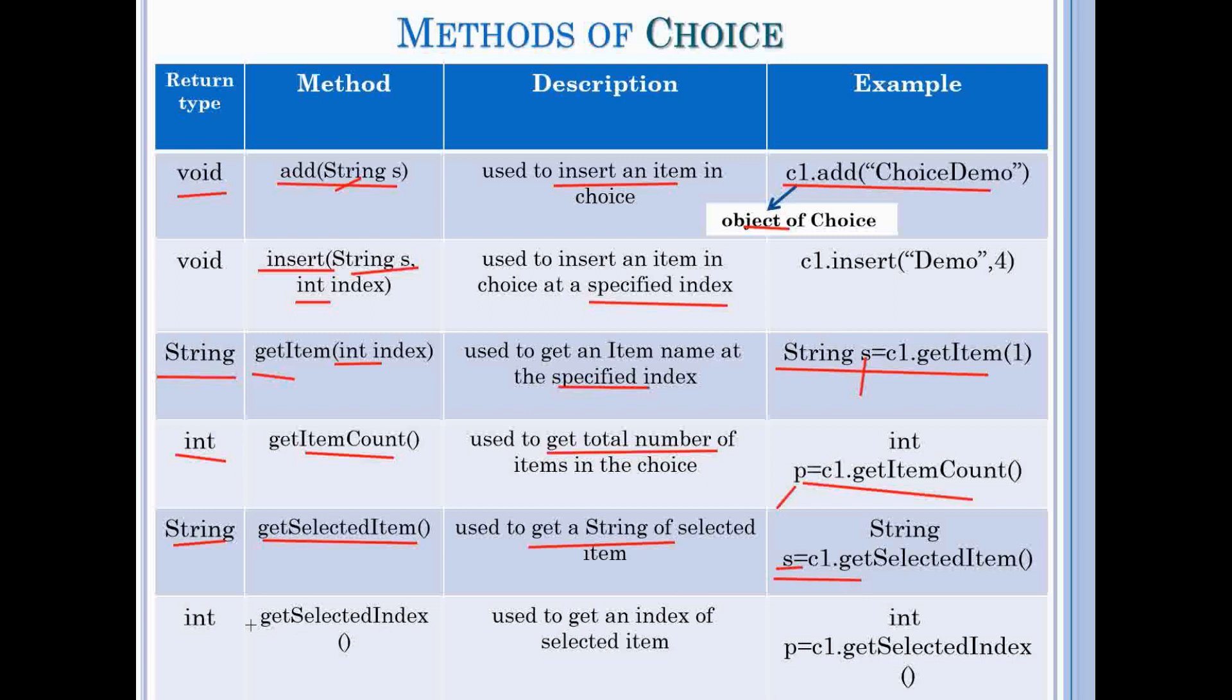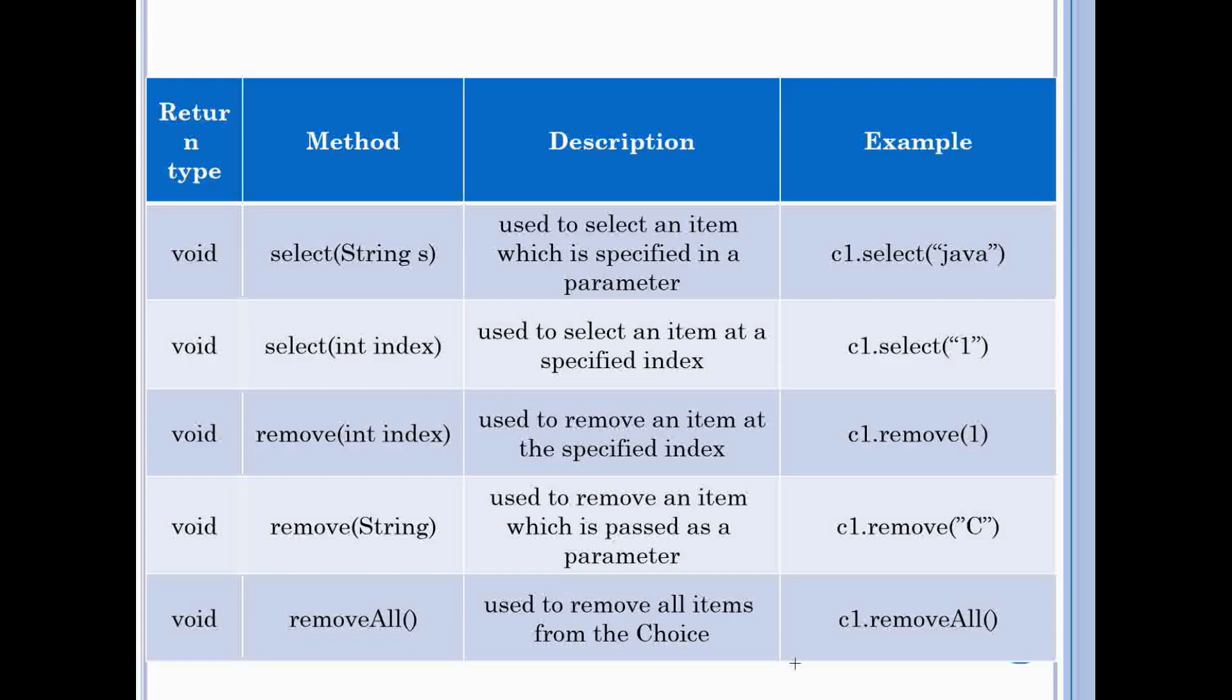Sixth method is getSelectedIndex which returns integer value and is used to get an index of selected item and store the result in integer value. Seventh method is select with string parameter and used to select an item which is specified in a parameter and used like this.